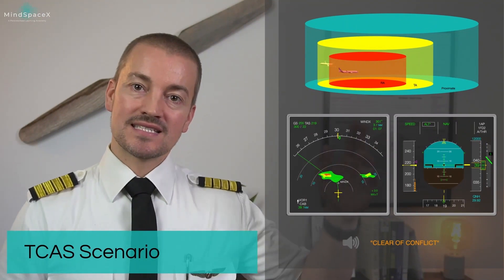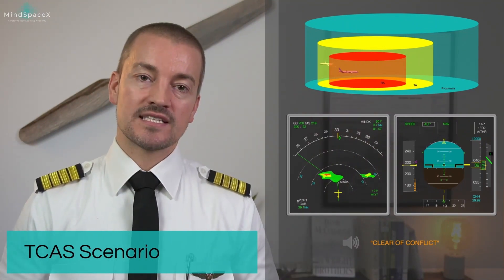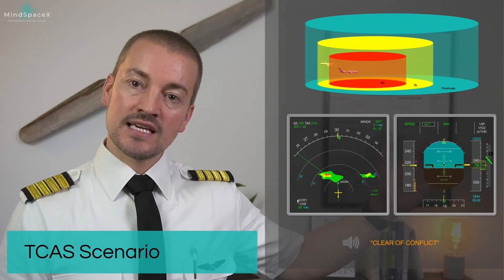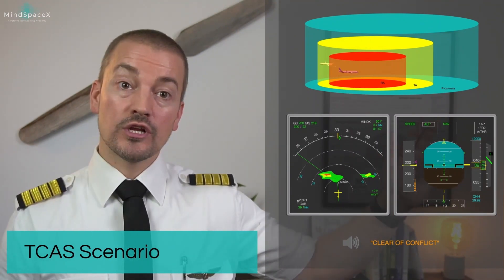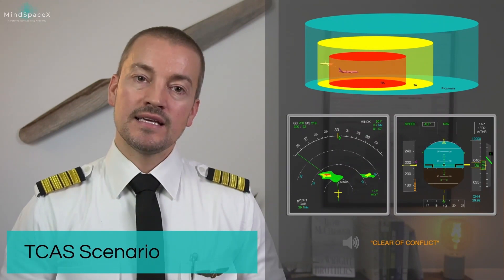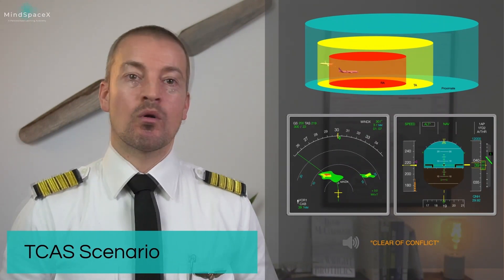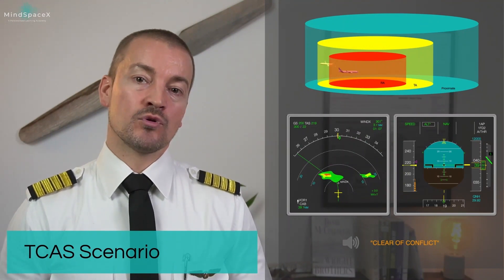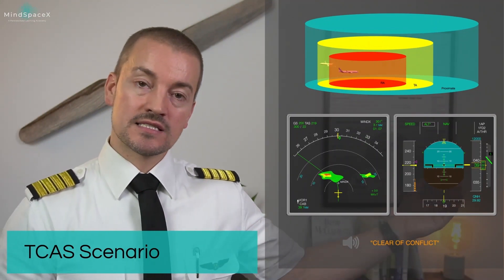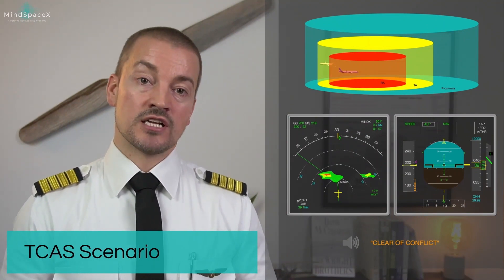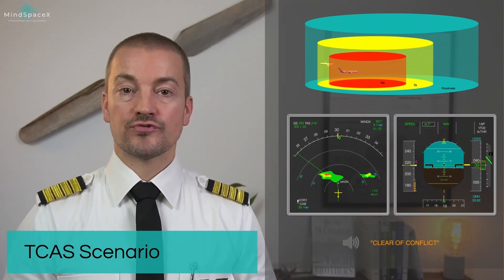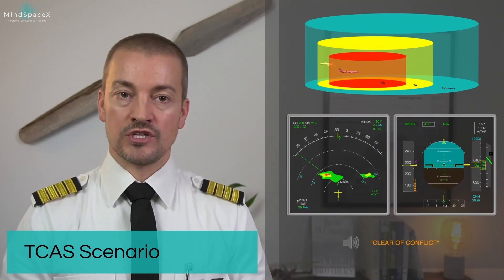Once our aircraft safely maneuvers around the intruder, the autoflight system will start to return the aircraft back to its original level of flight. It will go into a light climb, putting the vertical mode into ALT, and an aural caution is triggered saying 'clear of conflict,' allowing us to return to our original state of flying. If this is a manual maneuver, the crew will have to return the aircraft back to its original state.